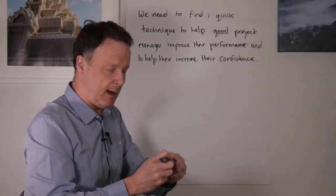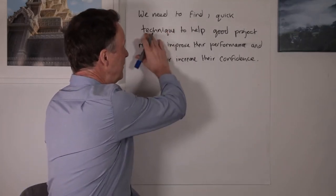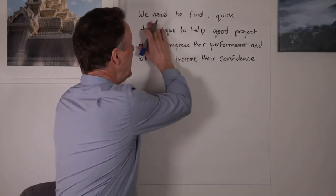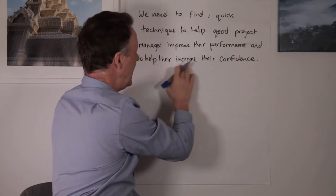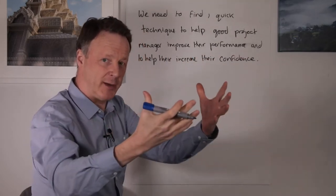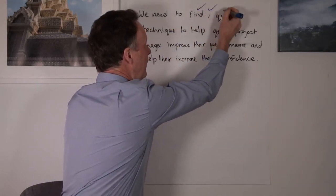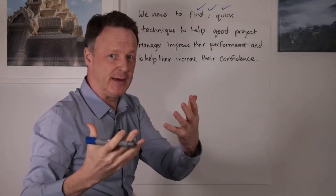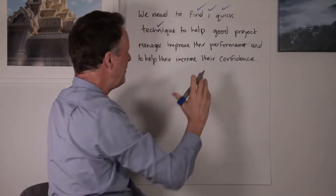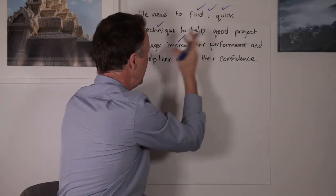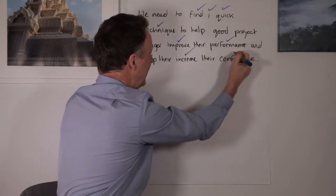So the first part is deep filtering. Here we've got some information and I might have written this down verbatim or part verbatim. We need to find one quick technique to help good project managers improve their performance and to help increase their confidence. With a deep filter I'm looking to just take out the relevant information. Here I'd probably do find one quick, and everyone will filter deep filter differently and that's normal.